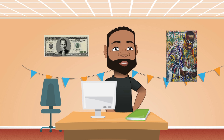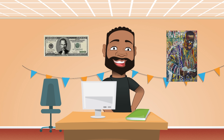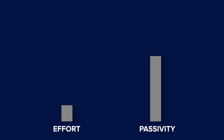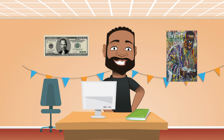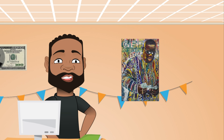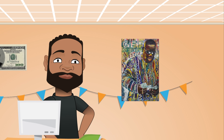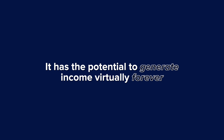Usually every business requires a high level of effort at the beginning, only to become more passive as time progresses. For example, if you want to sell your coding course via your email list, first you're going to have to grow the list, then create the product itself. However, once the product is live, you have the potential to generate income virtually forever.